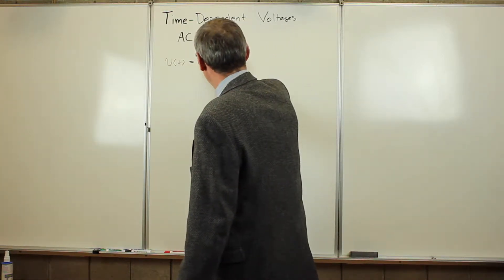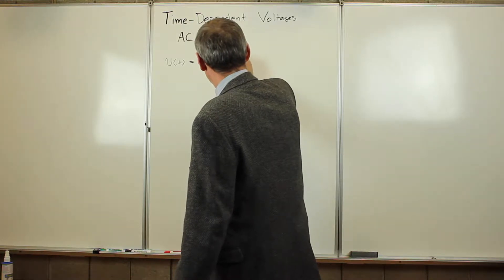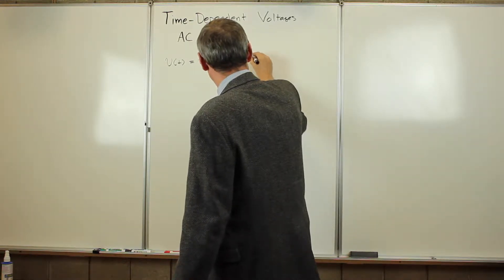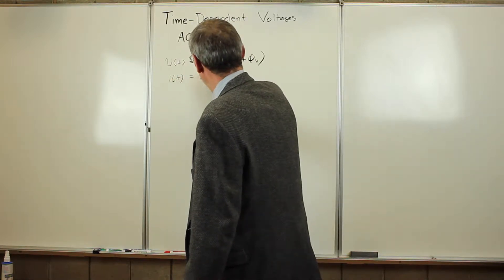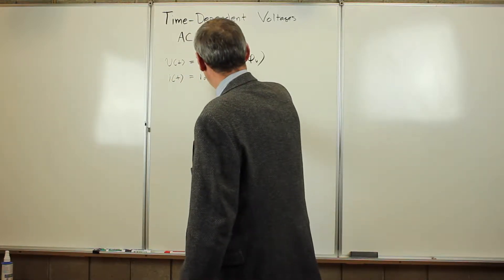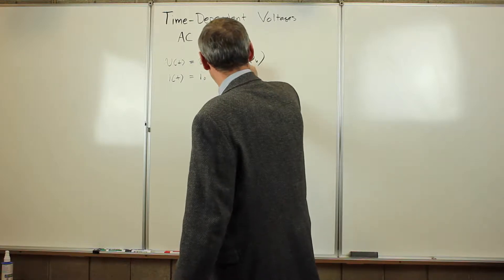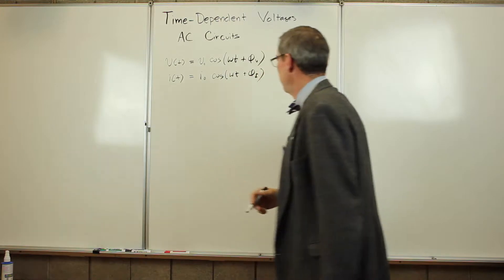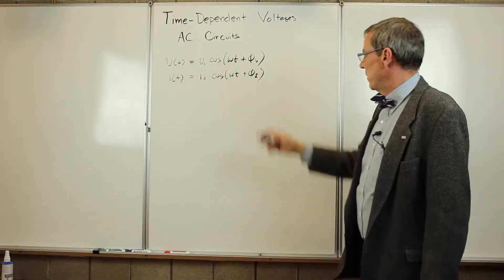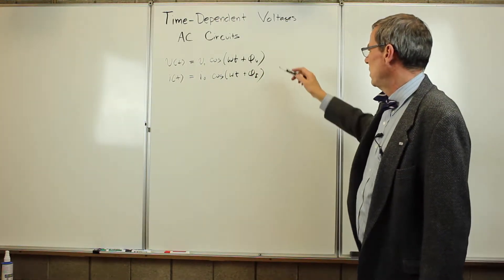v0 times cosine omega t plus some phase associated with the voltage, and we'll have a time-dependent current, which is some amplitude, cosine, same frequency, omega t, but possibly a different phase for the current there. We write them as these cosine functions here.